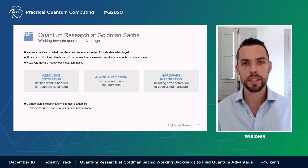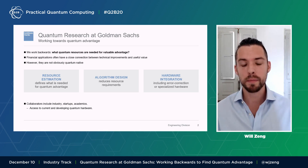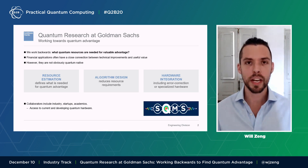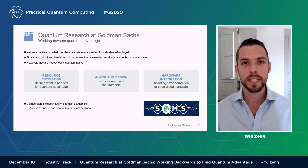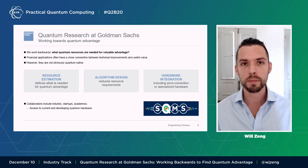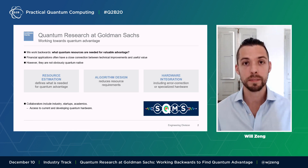All of this happens in collaboration with lots of folks. We see this as a research area, and so we're involved in one of the national quantum initiatives — the SQMS center run by Fermilab. Because at this stage, the application of quantum computing goes to fundamental algorithms and science, and so we see it as really important to be connected all the way there.